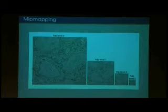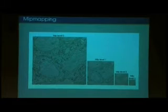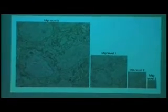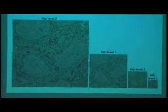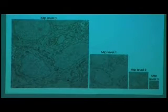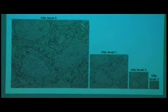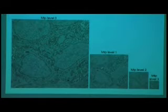How mip mapping works: taking the source image data, we pre-build downsampled versions using the CPU. We scale the source image down to half its size and keep doing that until it goes below a certain threshold level. Each level of downsampling is known as a mip level — so the source image is mip level zero, then mip level one, and so on.